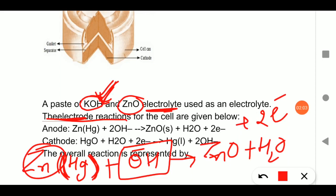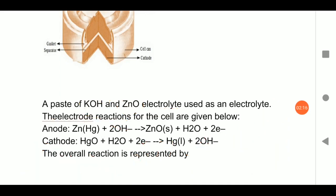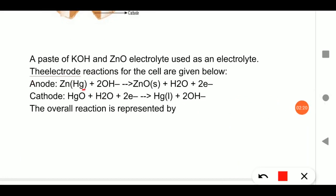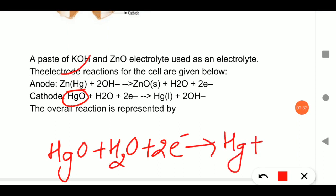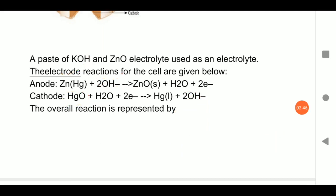A common board exam question is: why does the mercury cell give constant voltage throughout its life? At the cathode, mercury(II) oxide (HgO), in the presence of water, gains the two electrons released by zinc and forms pure mercury (Hg) and two OH⁻ ions. So the OH⁻ consumed at the anode is regenerated at the cathode — its concentration remains constant.